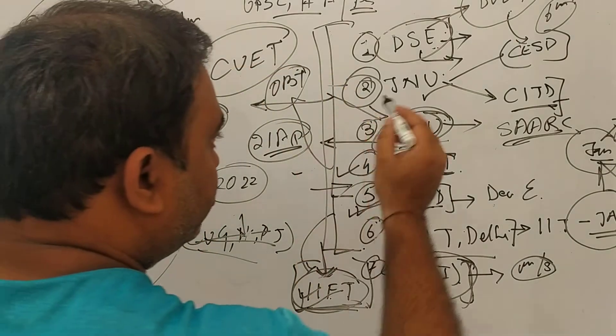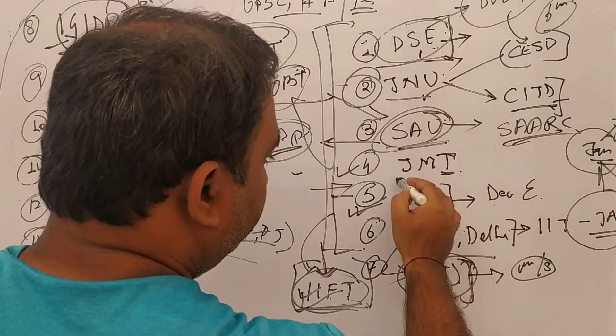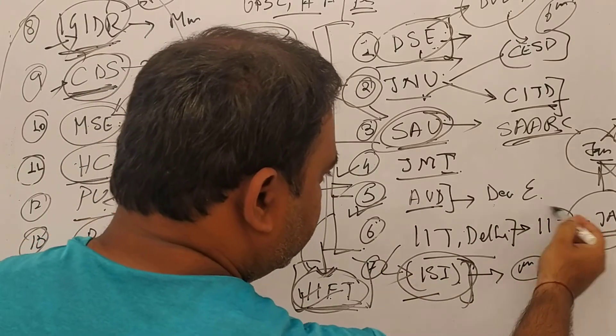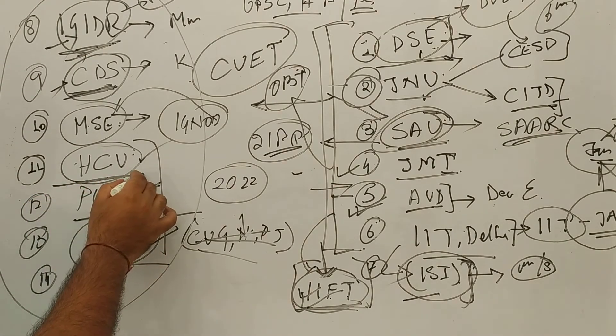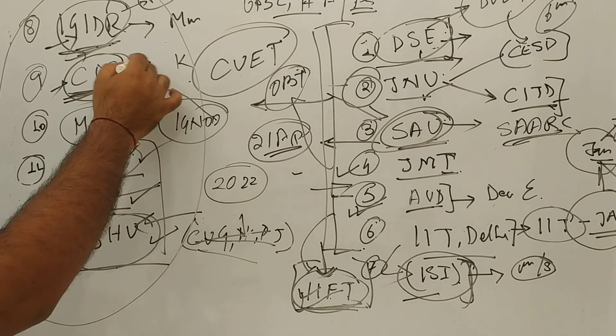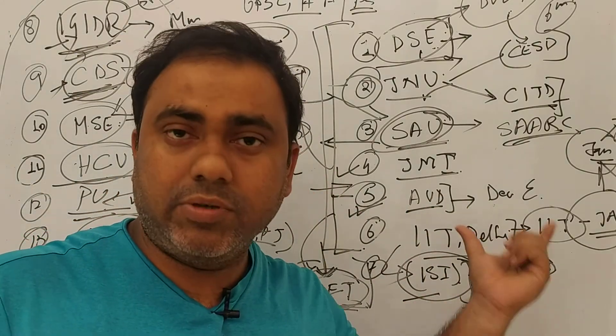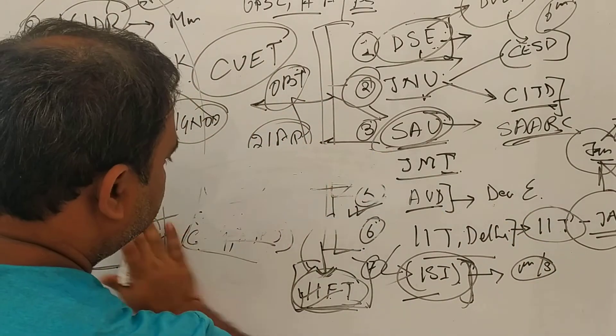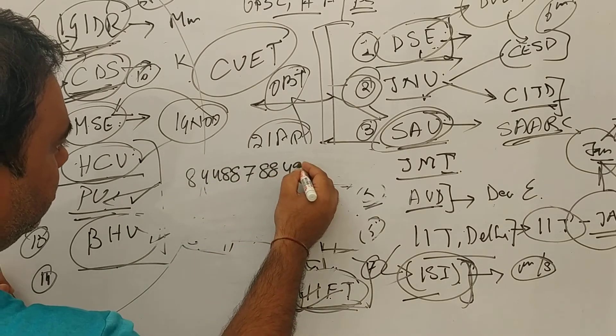And we have question last 10 years question for DSE, JNU, SAO, we have for 6 years for JAMIA, we have ISI 2 years paper of entrance exam, BHU 10 years, HCU 10 years, Pondicherry 5-6 years, CDS 10 years question paper. If you want the question paper, you can give us a call or send us a WhatsApp message on our number. It's 844-887-8849.